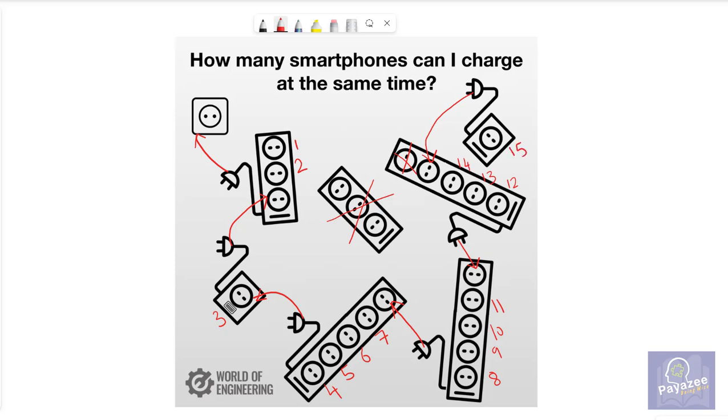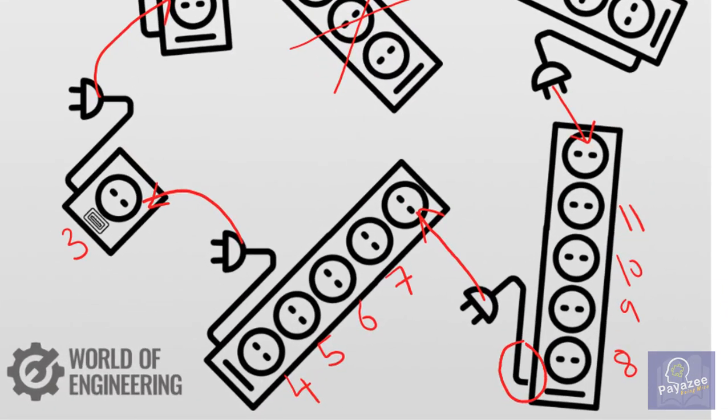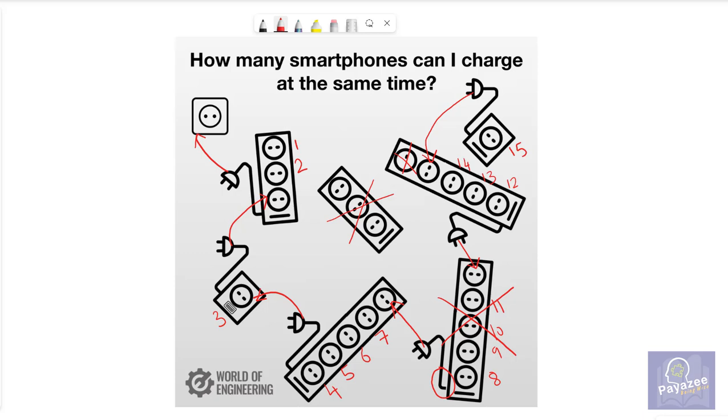So did you get the answer 15? Well there is one problem in this puzzle. This wire is broken here. So this complete box will be faulty. We cannot use this.